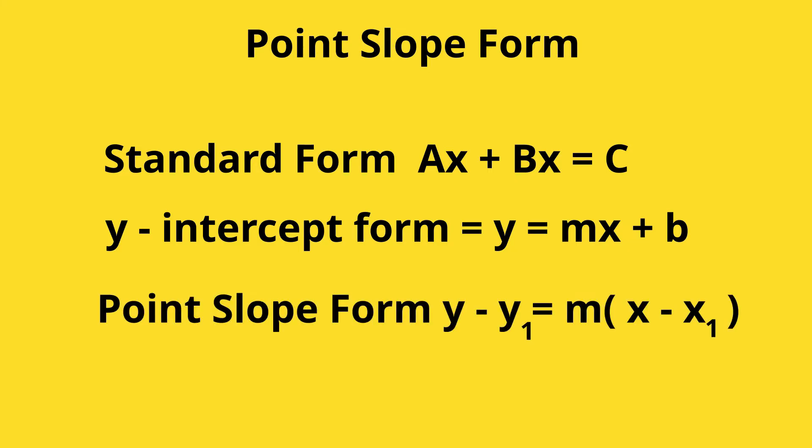The equation is y minus y₁ equals m, which is the slope, times x minus x₁. That is point-slope form.